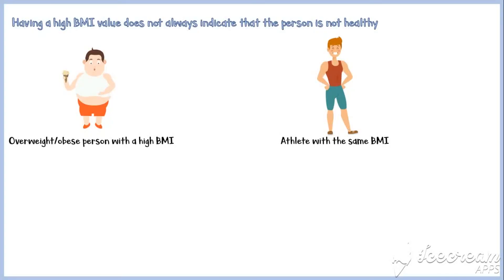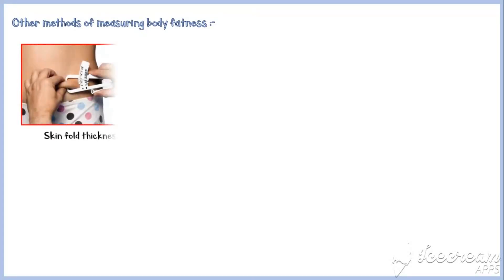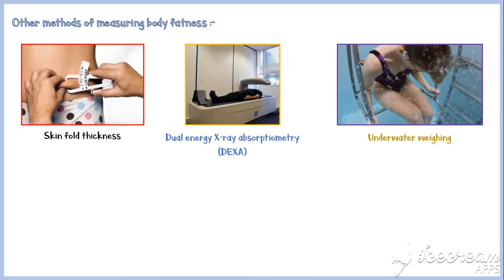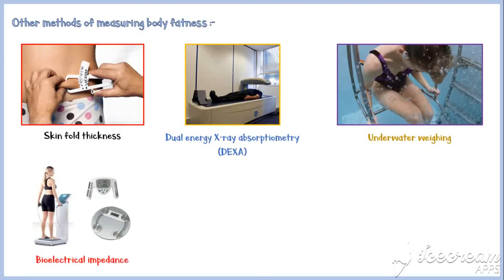So, if a person has a high BMI value, it is good to consult a trained healthcare provider to see whether the person is actually ill. In addition to body mass index, there are also some other methods of measuring body fatness. These include measuring of skin fold thickness using calipers, dual energy x-ray absorptiometry or DEXA method, underwater weighing method, and bioelectrical impedance.